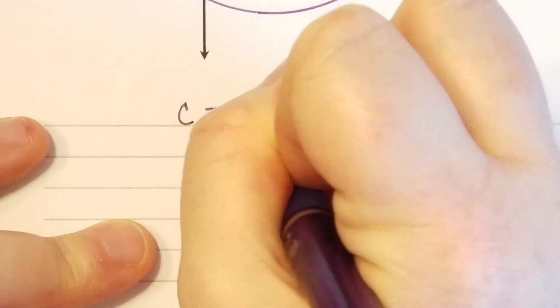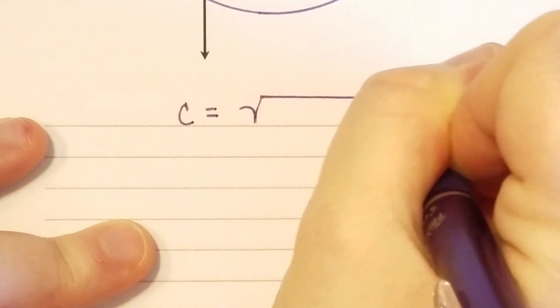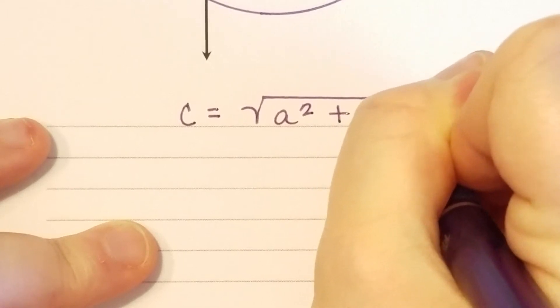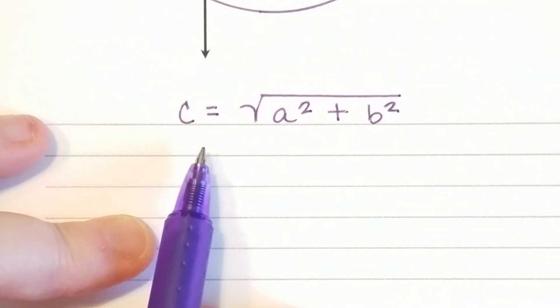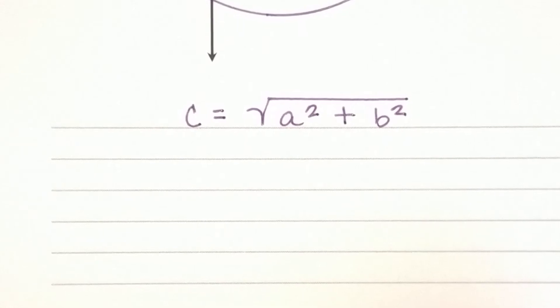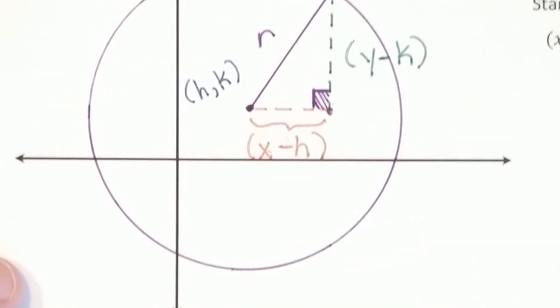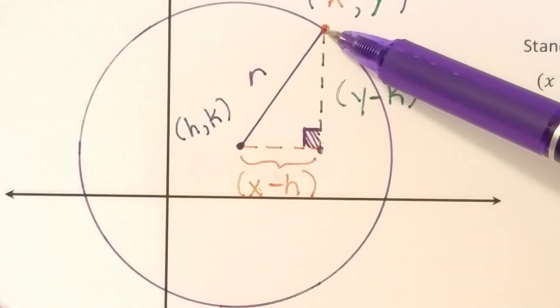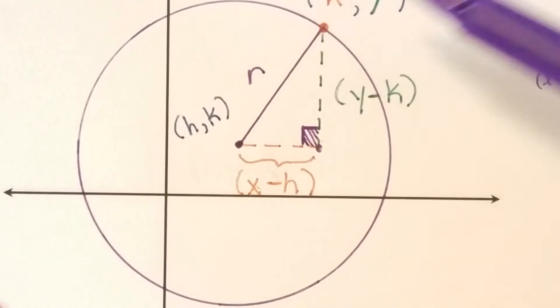So if I wanted to find the hypotenuse of a right triangle, I would use the distance formula. This is the Pythagorean theorem after we solve for c. So I'm going to use this because c represents the hypotenuse of the right triangle, and in this case r represents the hypotenuse of the right triangle.